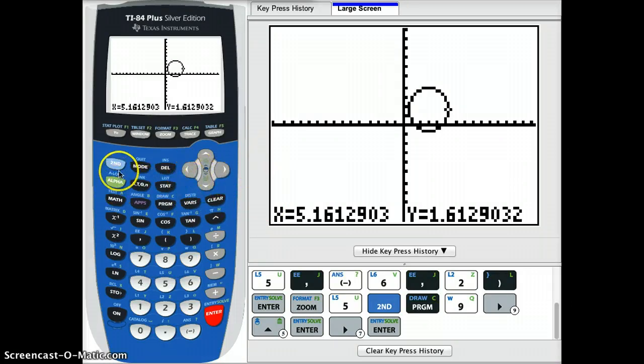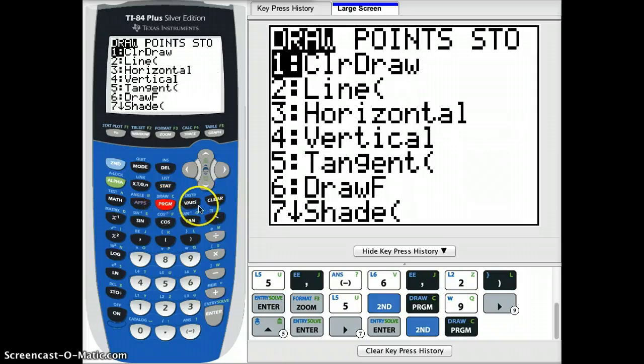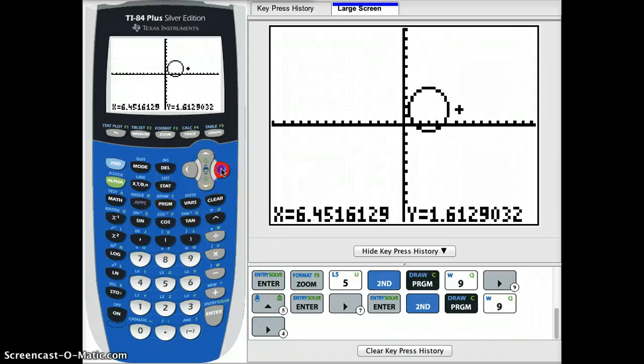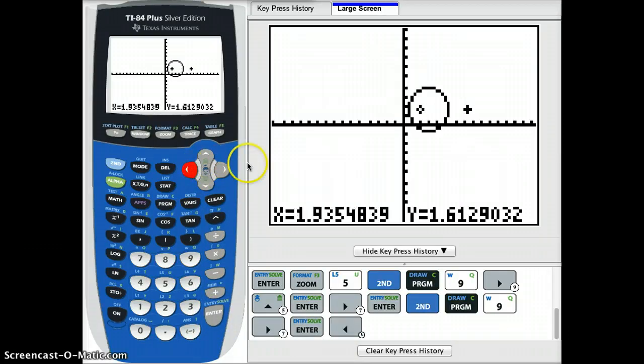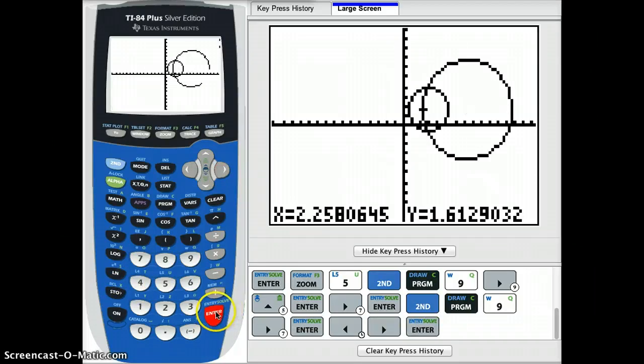So again, from the graph screen, 2nd, program, number 9. And again, just move to a location where you're satisfied with a center. Press enter to lock it in. Use your arrow keys. You can either move left or right or up or down. And when you've determined the size radius, press enter. And then you've got another circle.